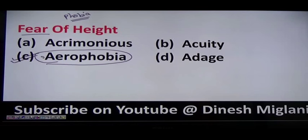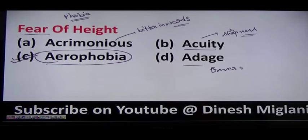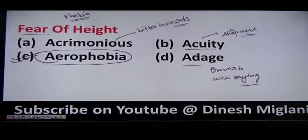Other terms covered: acrimonious means bitter in words or comments; acuity means sharpness; adage is a proverb or wise saying — for example, 'there is much truth in the old adage that fools and their money are soon parted.' These are basically proverbs.